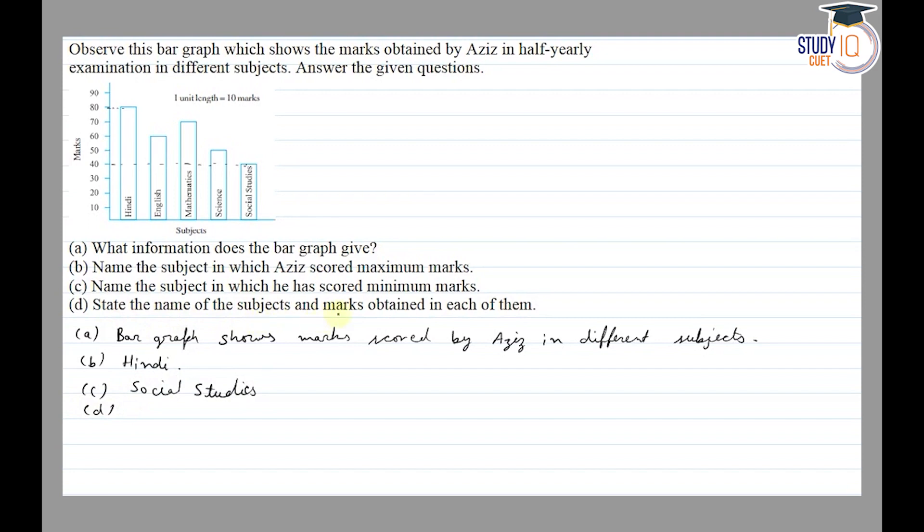Part D: State the name of subject and marks obtained in each of them. From the bar graph: in Hindi we have 80, in English we have 60, in Mathematics we have 70, and in Science Aziz obtained 50.